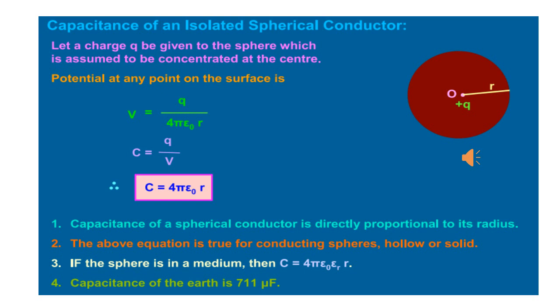The potential at any point on the surface of the spherical conductor will be V is equal to 1 by 4 pi epsilon 0 Q by R. From the definition of potential we can write V is 1 by 4 pi epsilon 0 Q by R.